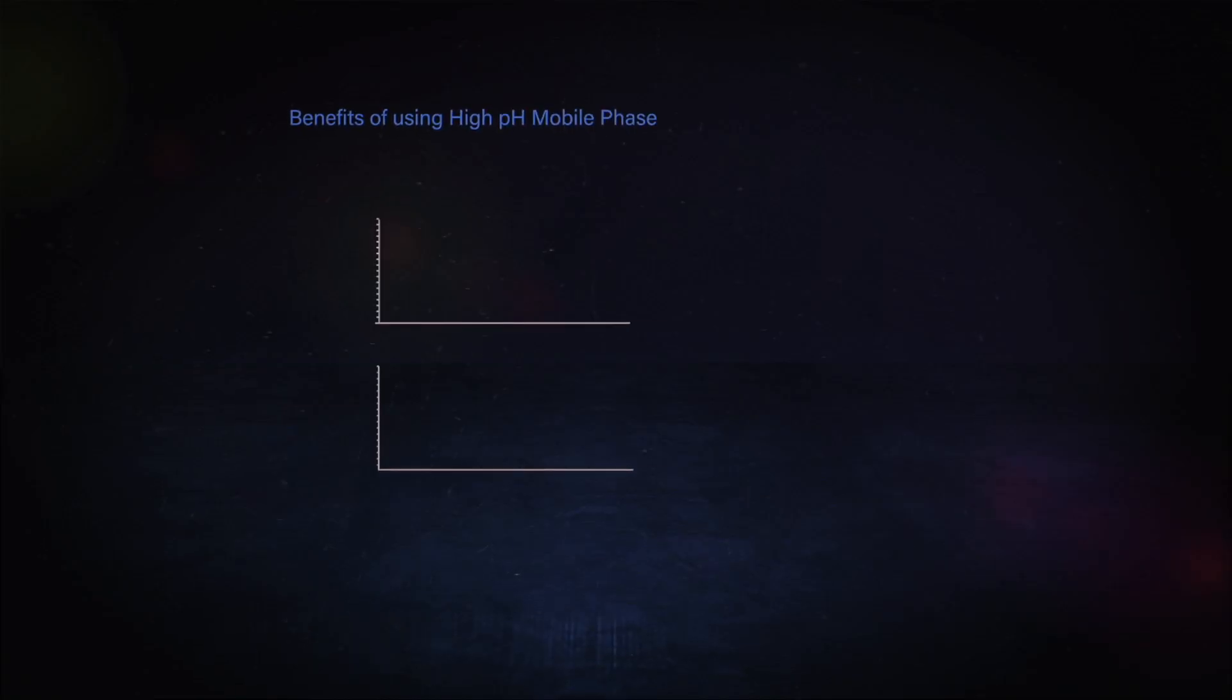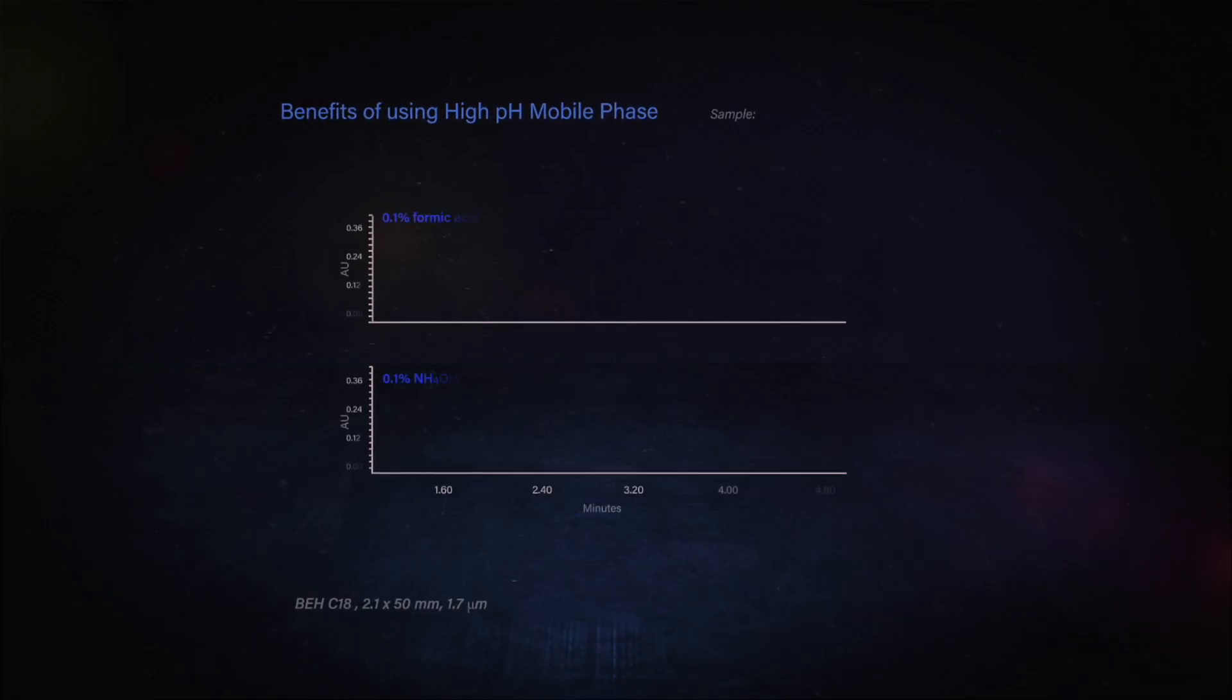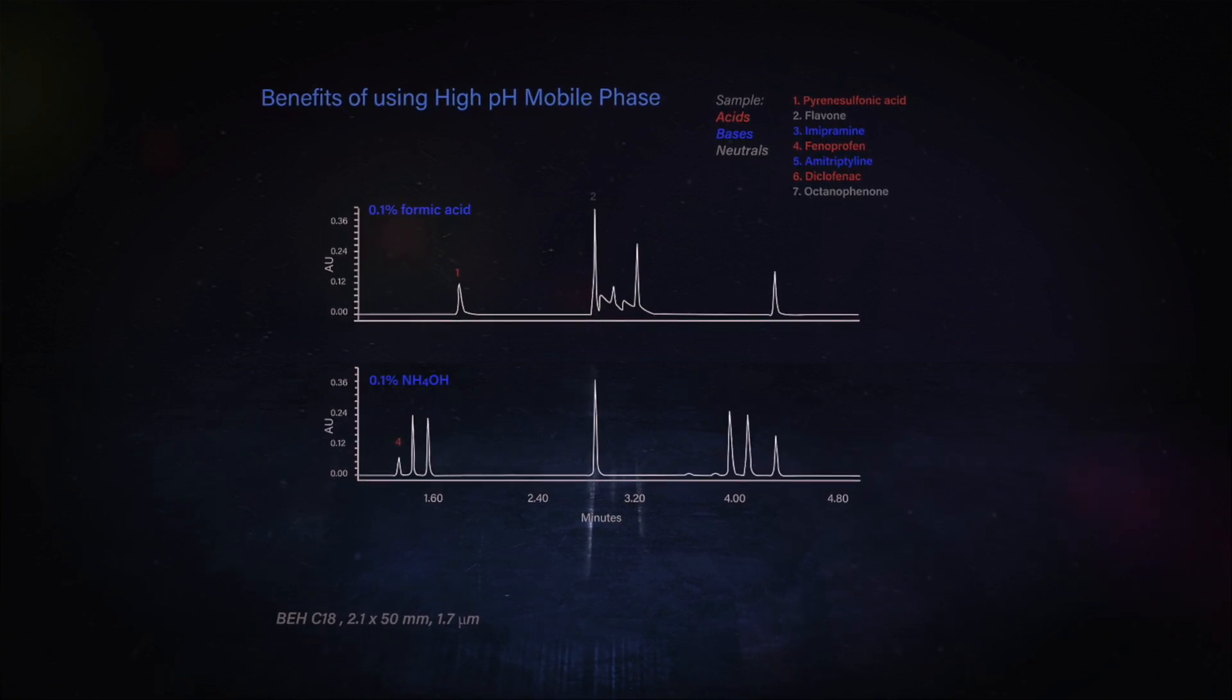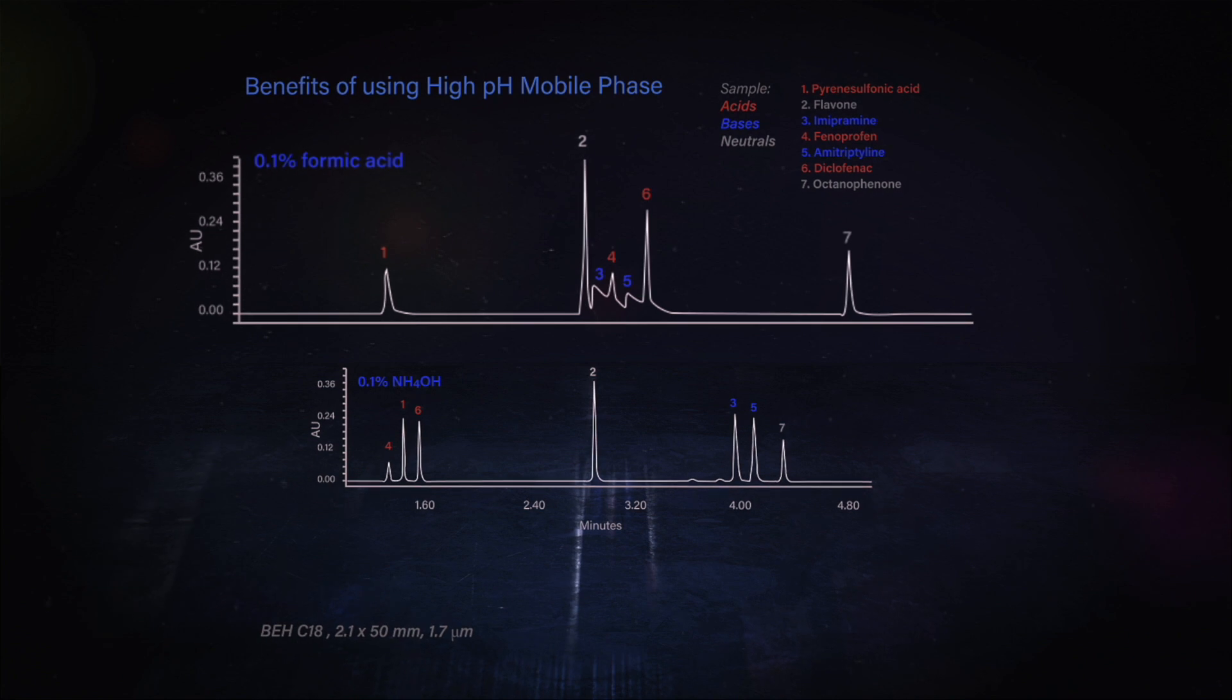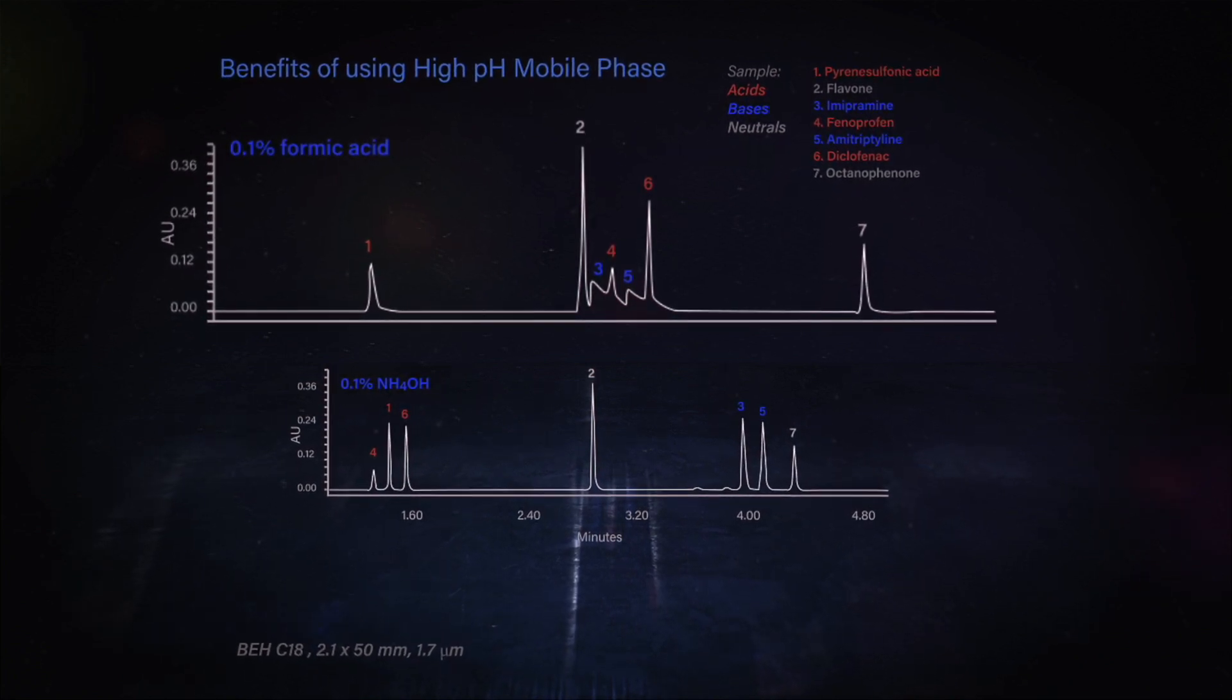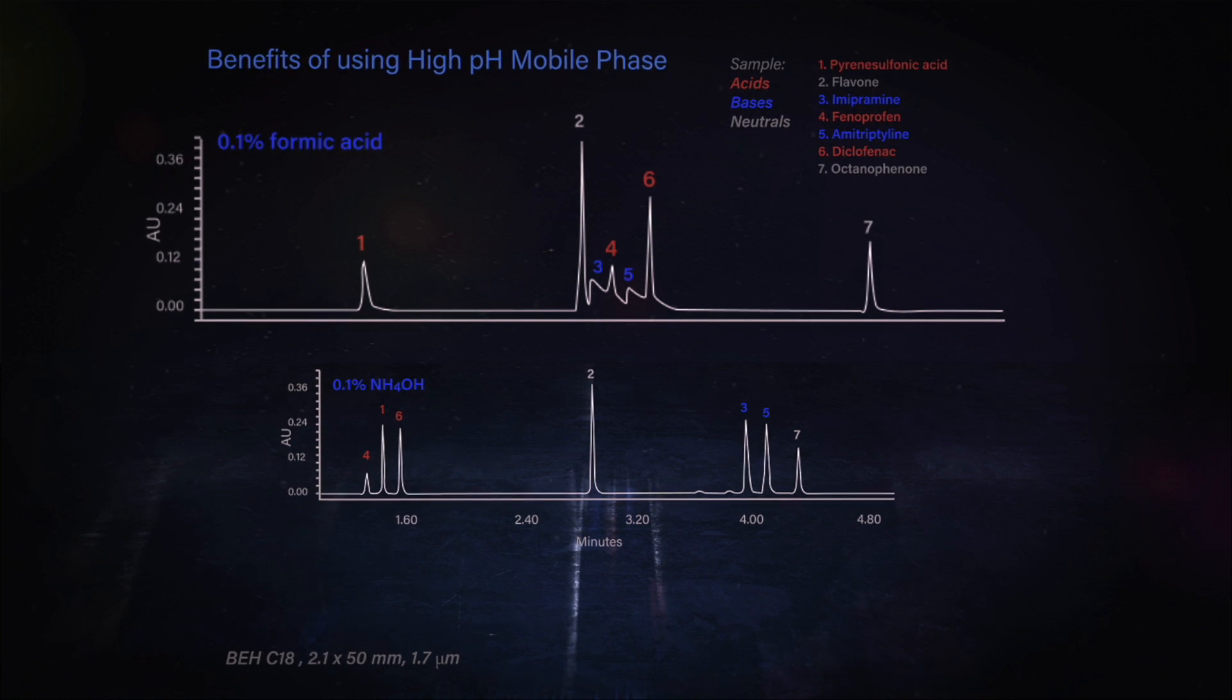So Kim, here are the results from the chromatography we ran at both low and high pH for that mixture of acidic, basic, and neutral compounds. As you can see in the top chromatogram, when we ran the sample mix using 0.1% formic acid, the acidic compounds are fairly well retained and have pretty good peak shape.